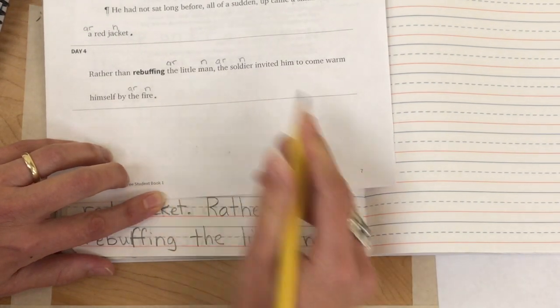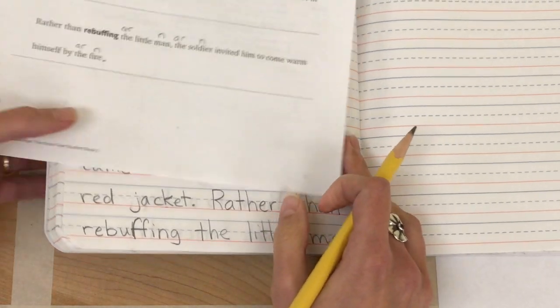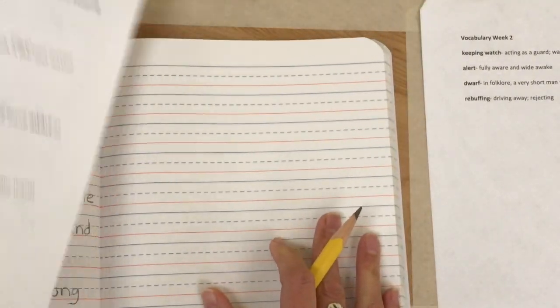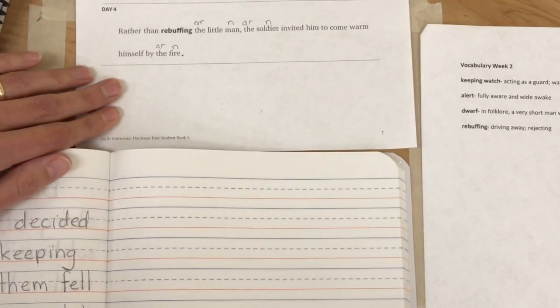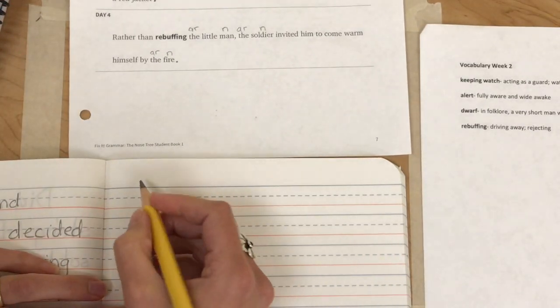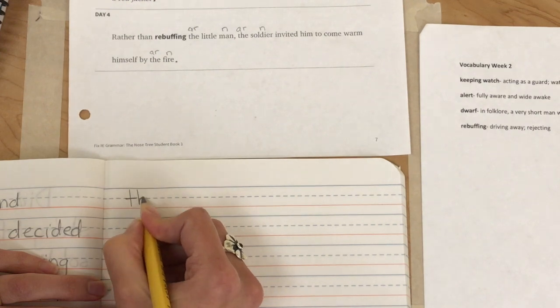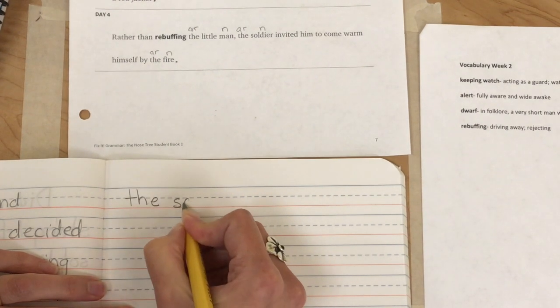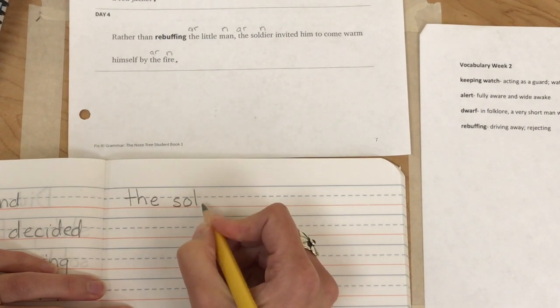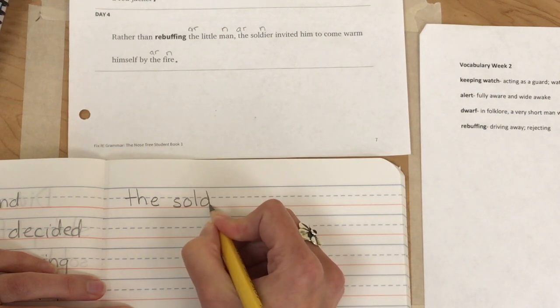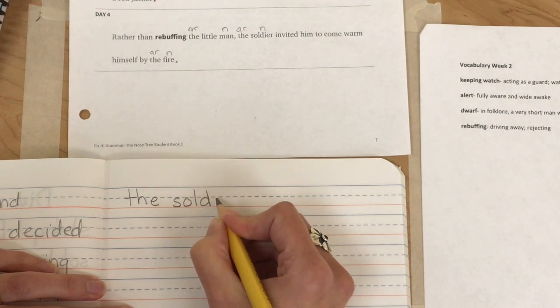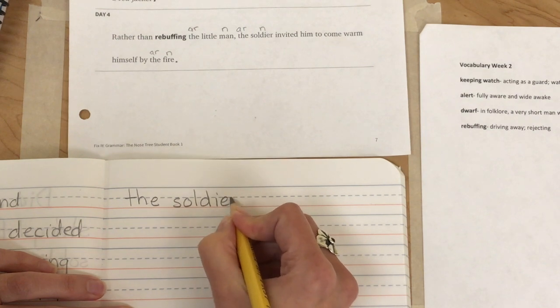Comma, the soldier. Ooh, this is a tricky word, huh? I'm going to make sure I spell it just right. S-O-L-D-I-E-R.